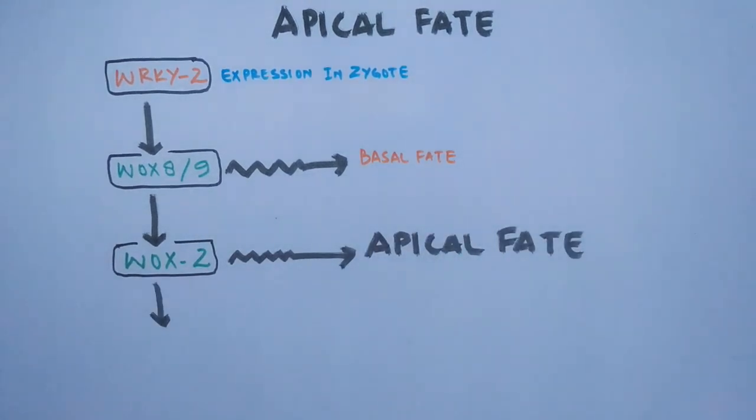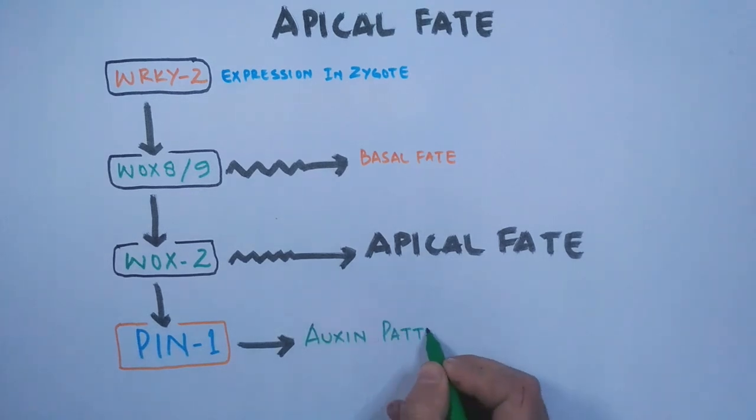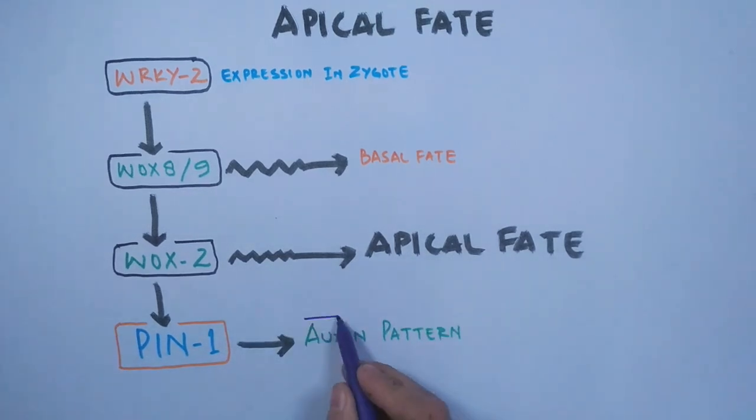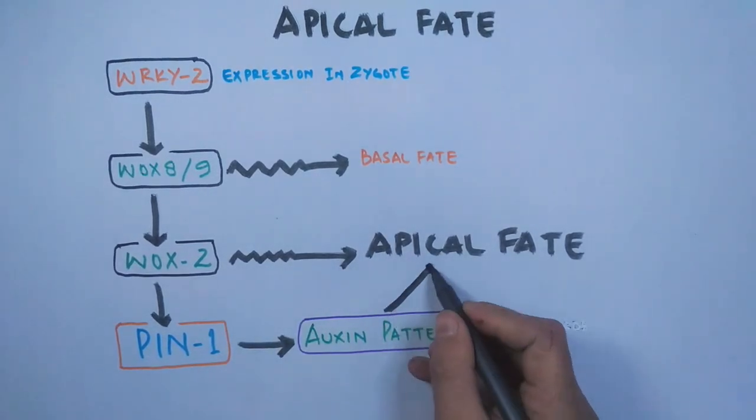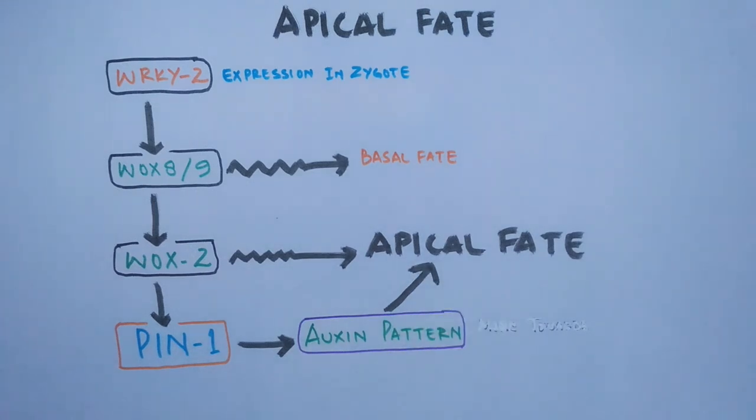Moreover, WOX2 also activates PIN1 expression. The PIN1 proteins are the auxin efflux carriers. This generates an auxin pattern within the embryo called the auxin polar transport. This also leads to the apical polarity in the cells.